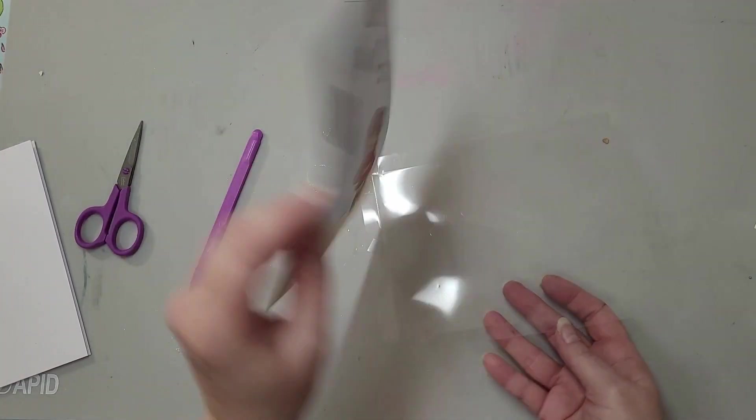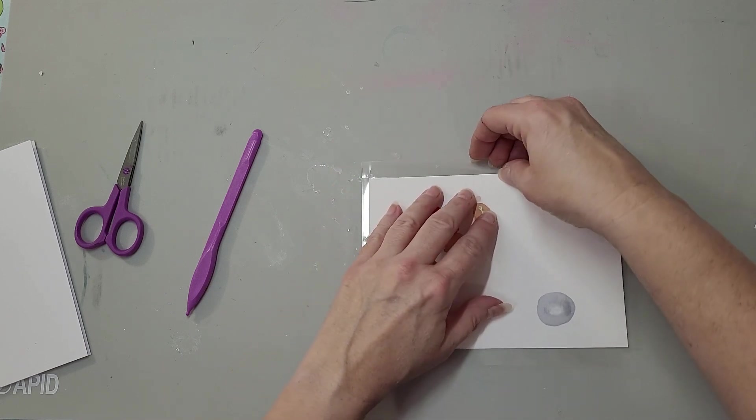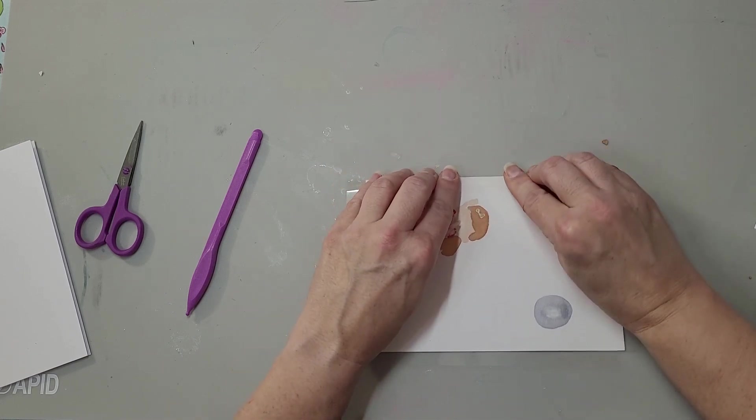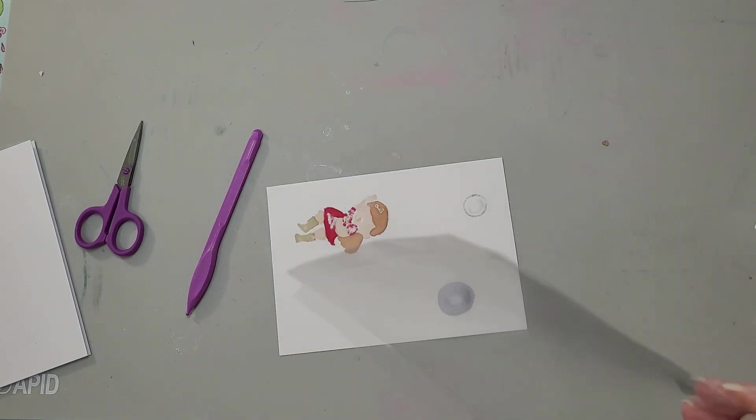Alright. So now I'm going to take my card front, I'm going to put it in here face down, and I'm going to make sure this all fits. Let's score this again and give it a better score.